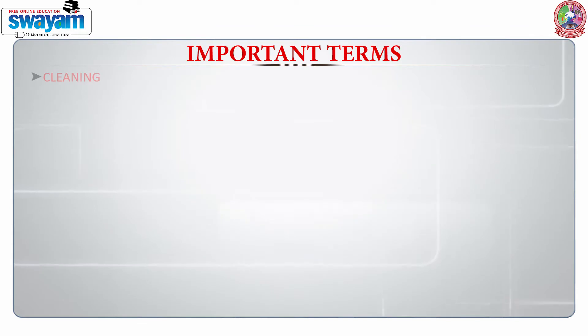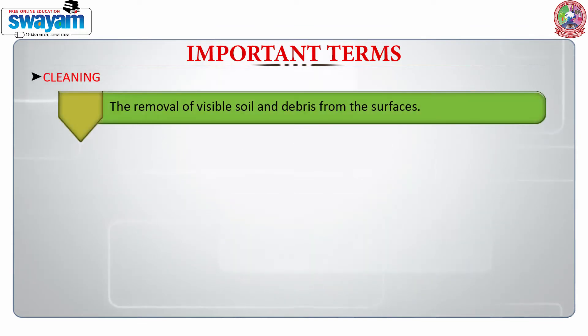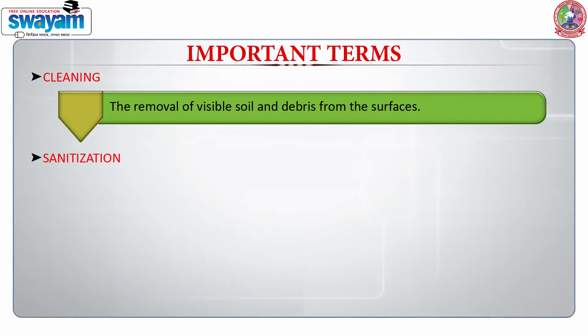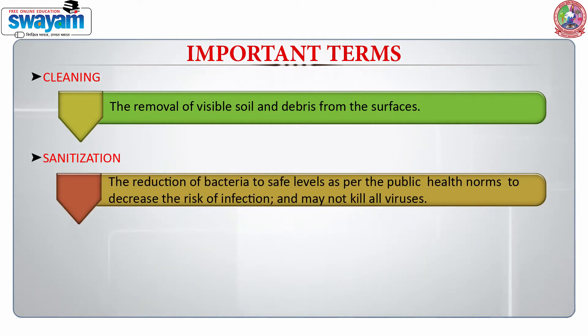Before we start talking about this module on hygiene and sanitation, it is very important for us to understand the meaning of certain terms. These terms will be used randomly and interchangeably in the module, so students must understand the literal meaning of each term. The first term is cleaning — this is a removal of visible soil and debris from surfaces. Sanitation, on the other hand, is the reduction of bacteria to safe levels as per public health norms.